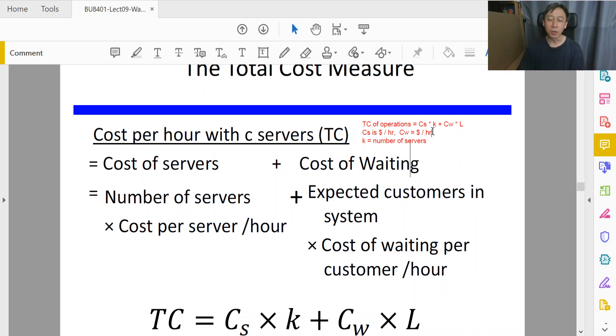This cost of waiting, if it is high, will cause us to therefore deploy higher number of k. Because if the cost of making some number of customers wait is high, how can we reduce the number of customers in our system? By increasing our service capacity, and that means deploying more servers.